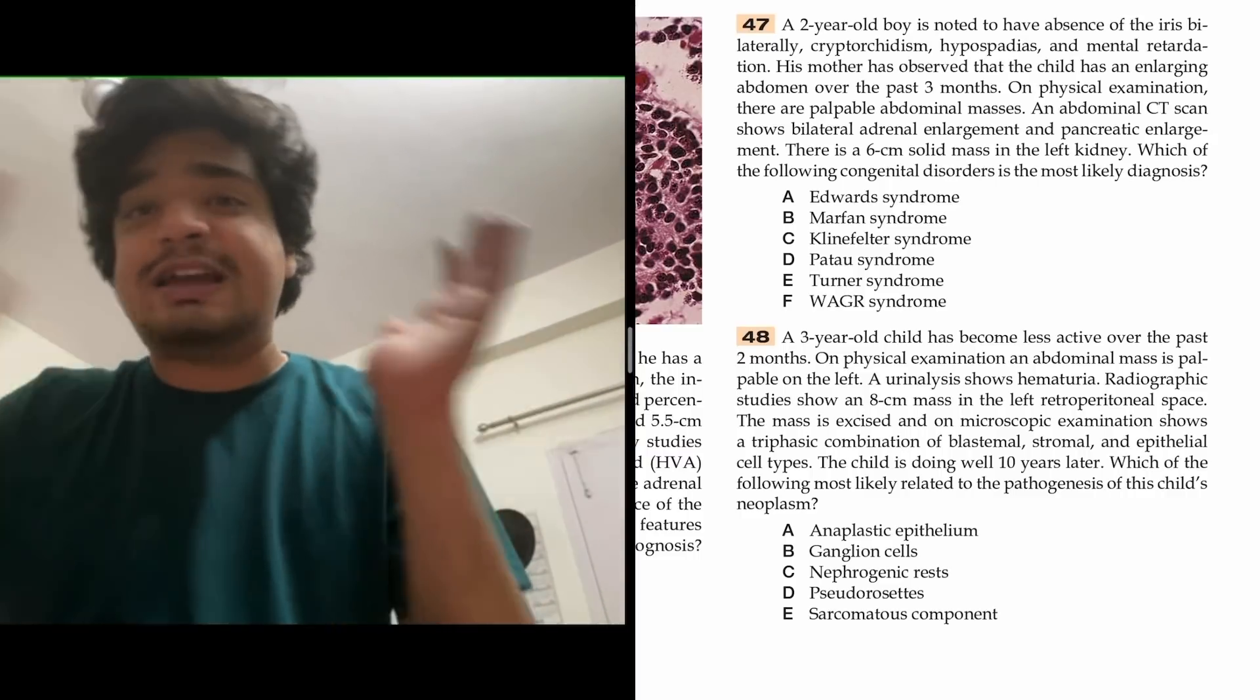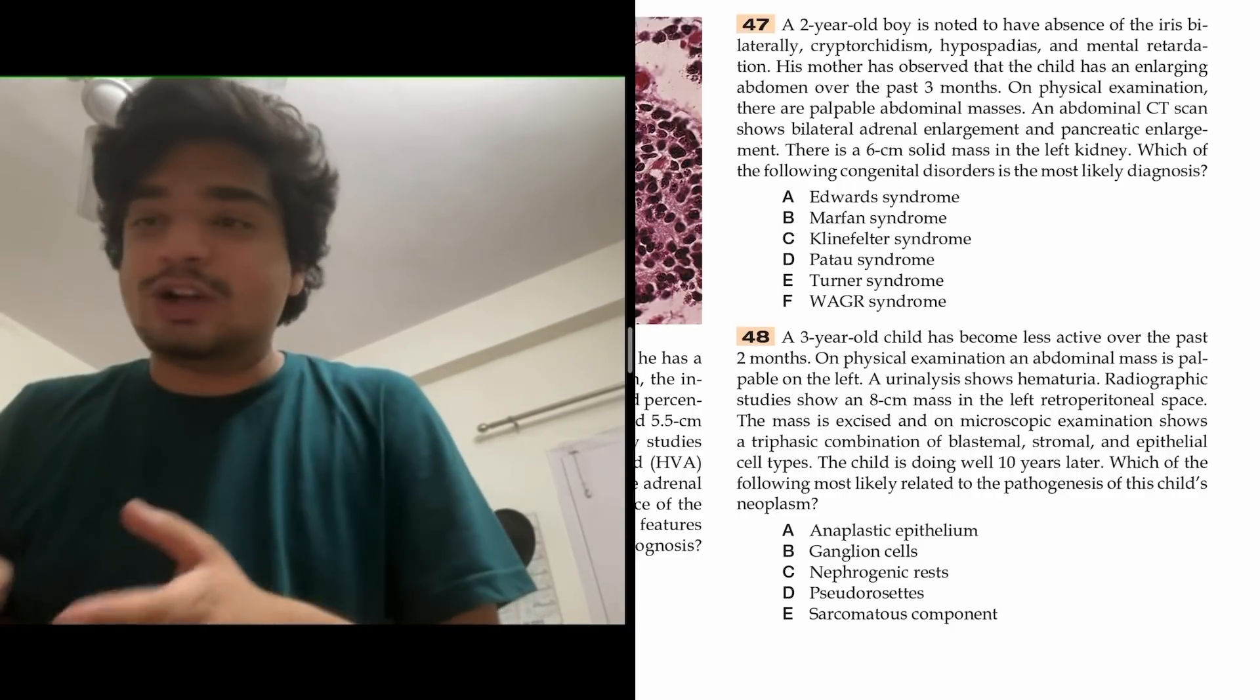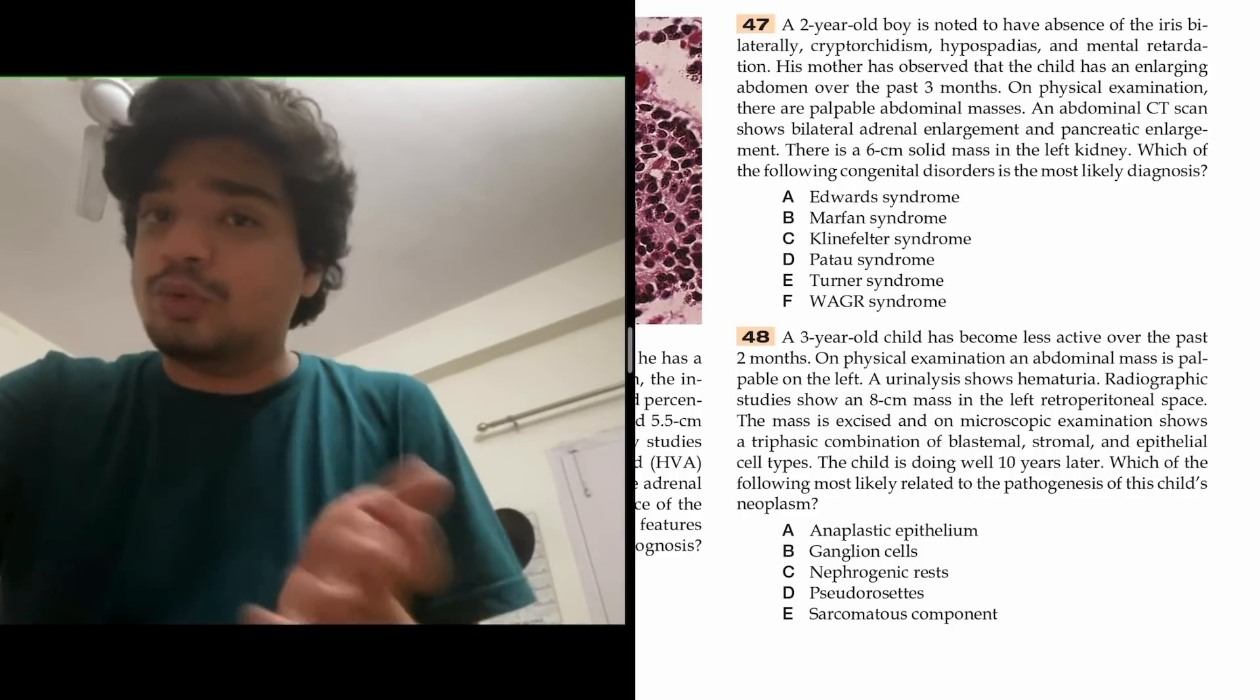The other components can be ruled out. Ganglion cells is probably neuroblastoma and things like that. Pseudorosettes are found in other cells - Homer Wright pseudorosettes in Ewing sarcoma, true rosettes in retinoblastoma. Sarcomatous component? No, Wilms tumor is not a sarcoma.